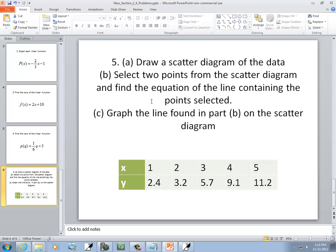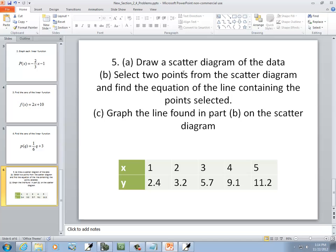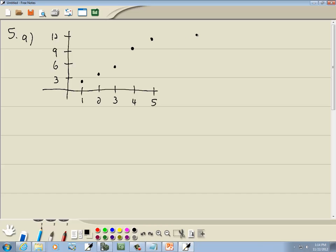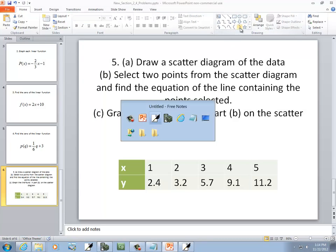Now B says, select two points from the scatter diagram. Find the equation line containing the points selected. Now we want to pick two that pretty well represent this. Like if I had one clear out here, I wouldn't want to choose it. I'll choose the first one and the last one. So our first one is 1, 2.4. And our last one is 5, 11.2.